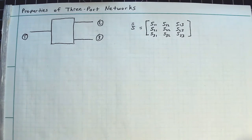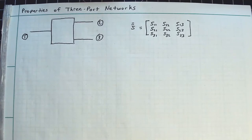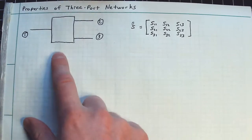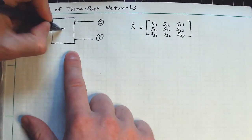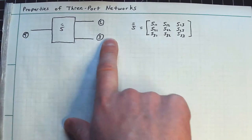Hey everyone, let's talk about some of the basic theoretical properties of a three-port network. So I've drawn here just a generic three-port network. This is port one, port two, and port three.